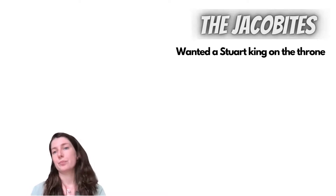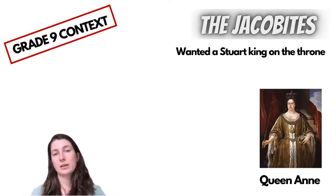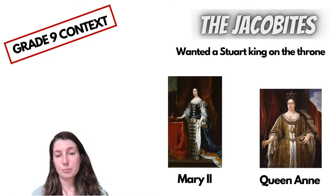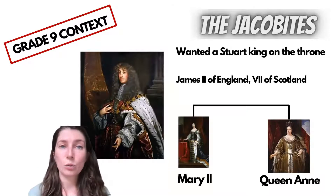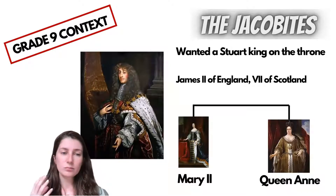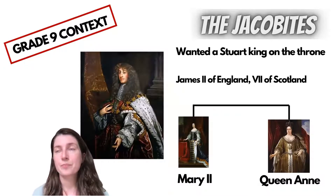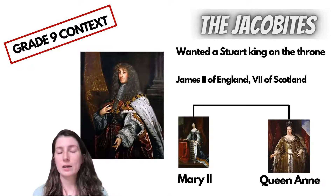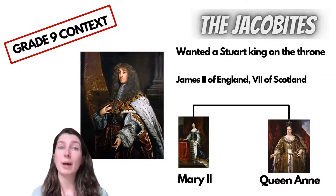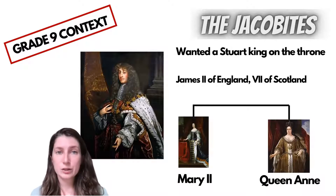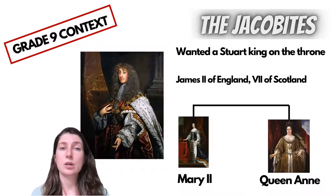So the Jacobites wanted a Stuart king. Anne was the last Stuart monarch on the joint English and Scottish throne. She followed her older sister Mary II. Mary II and Anne were both daughters of James II of England, who was James VII of Scotland. James was the younger brother of Charles II. Charles II was the restored monarch and son of Charles I. Going further back, Elizabeth I was the last Tudor queen — she died without any children, and the throne passed to her nephew.